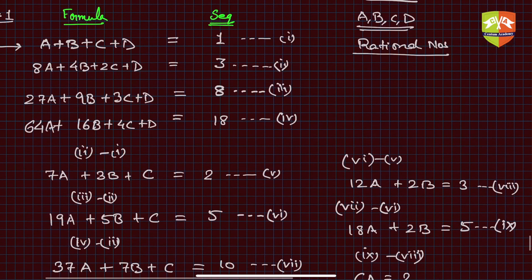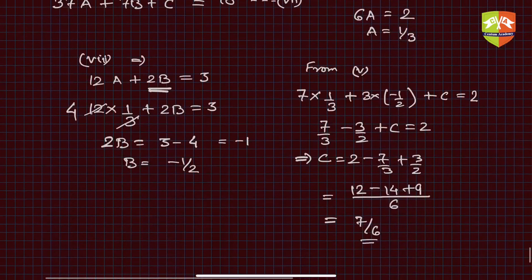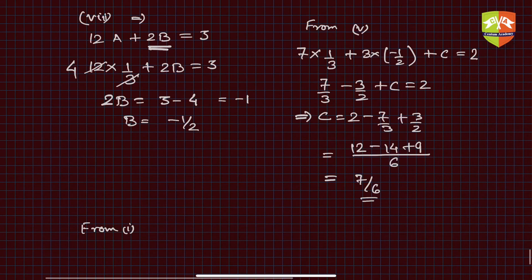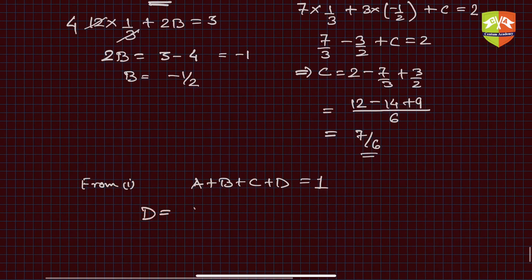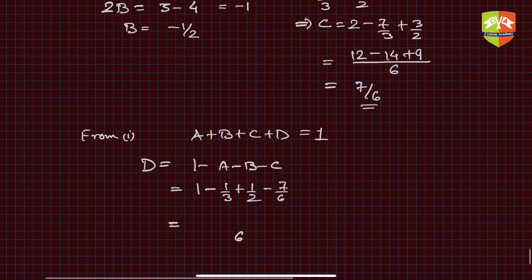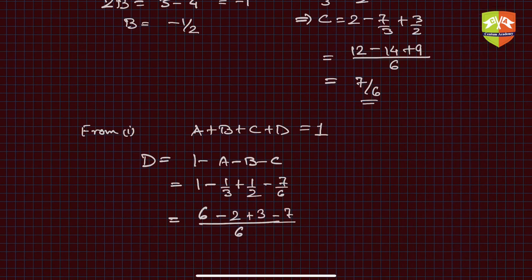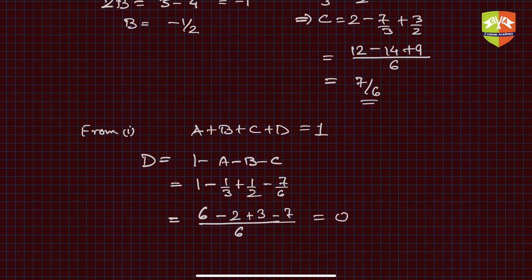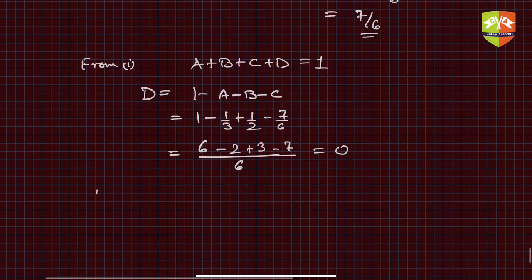To find d, use equation 1: a + b + c + d = 1. So d = 1 − a − b − c = 1 − 1/3 + 1/2 − 7/6. Taking LCM 6: d = (6 − 2 + 3 − 7) / 6 = 0. So d = 0.